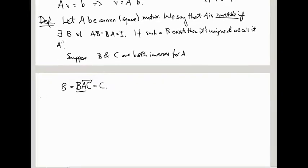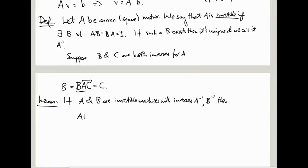Useful property of inverses which we can prove without further ado. Lemma: If A and B are invertible matrices with inverses A inverse and B inverse respectively, then the composition or the matrix product AB is invertible with inverse B inverse A inverse. So it's a bit like with transposes. When you invert a product, you end up inverting the two factors and sticking them in the opposite order.